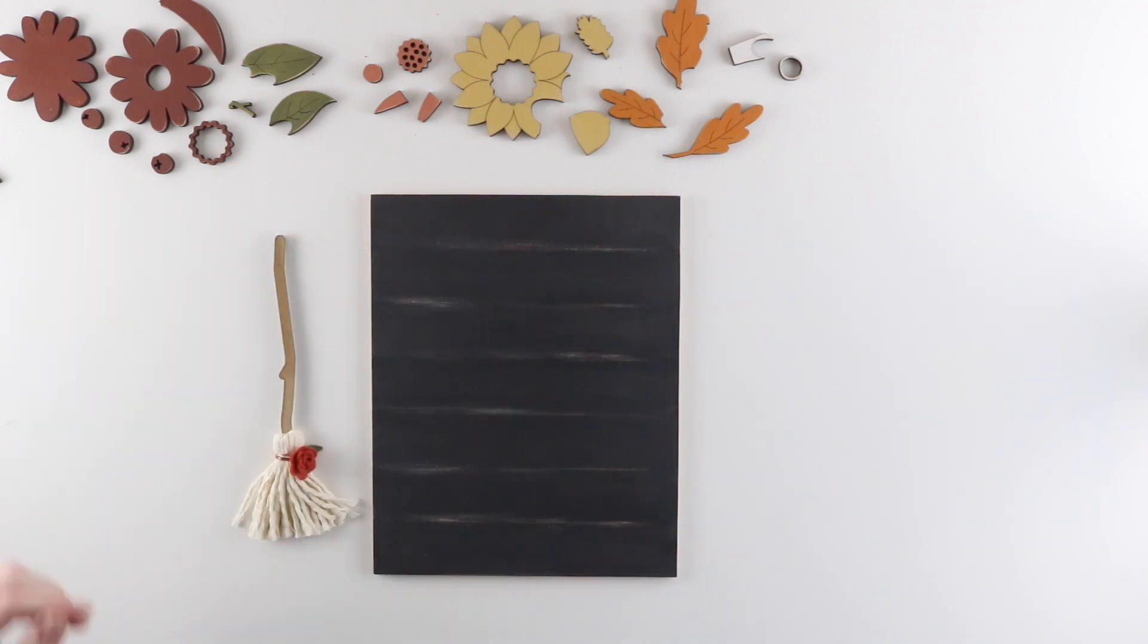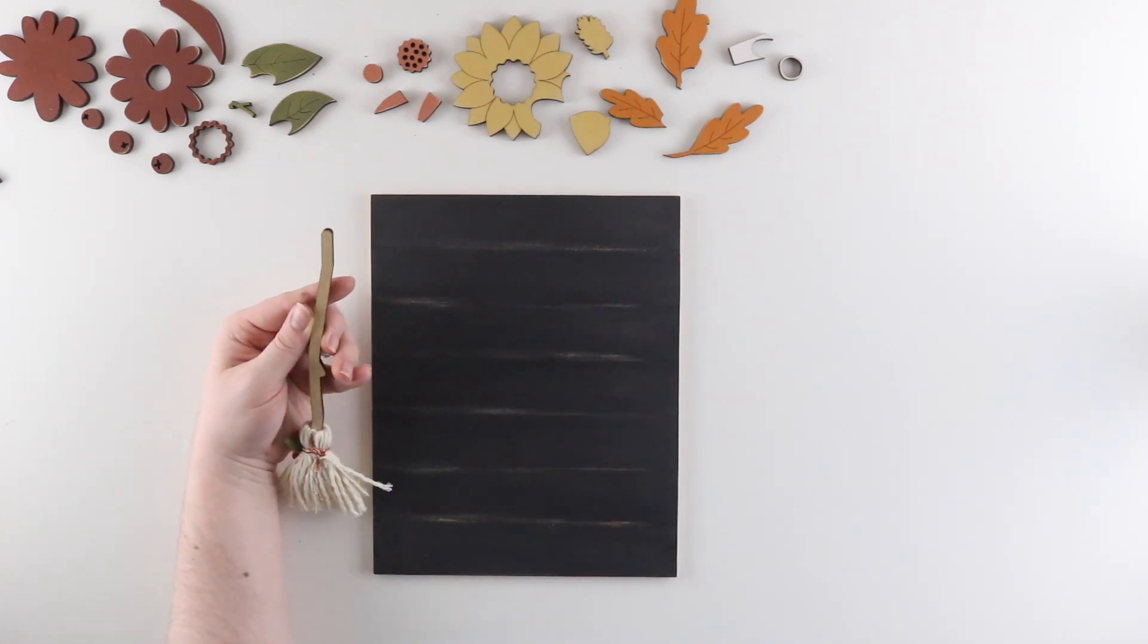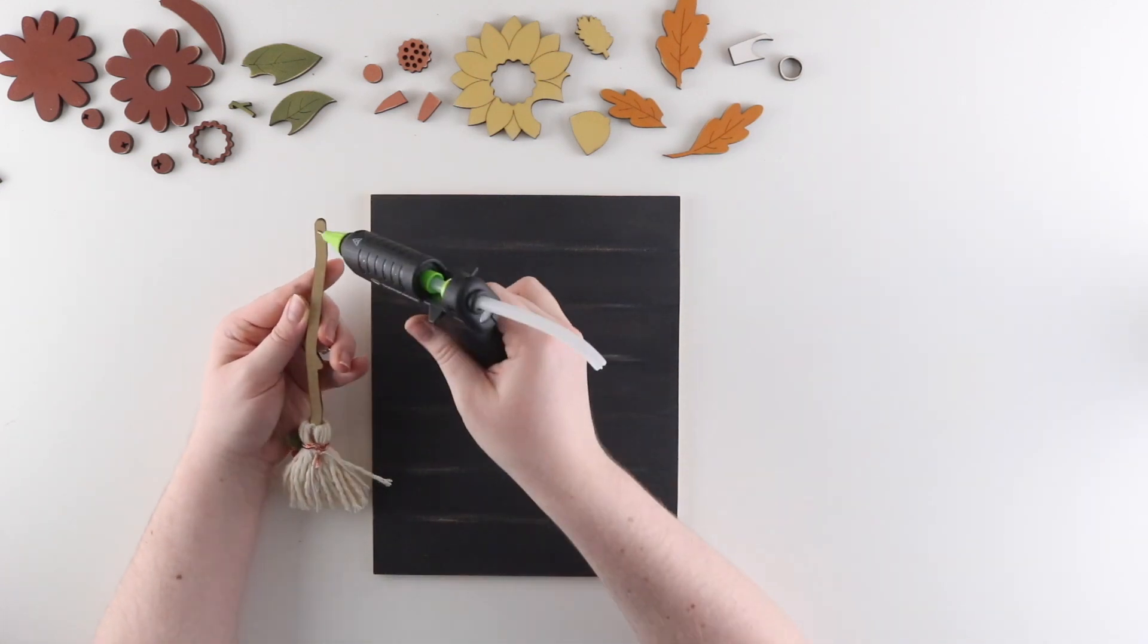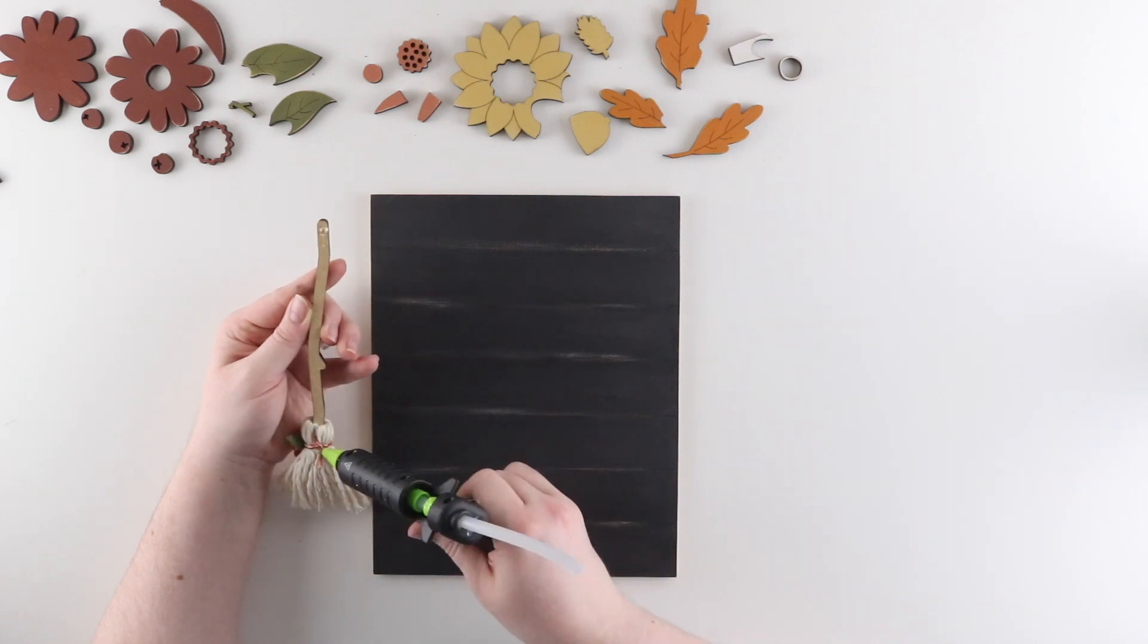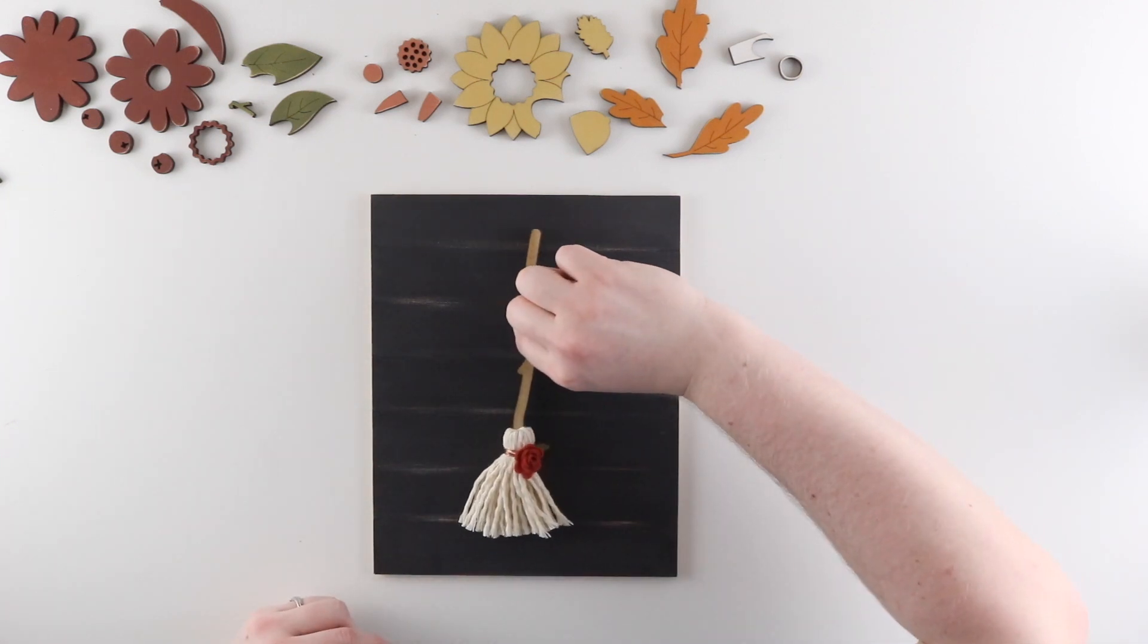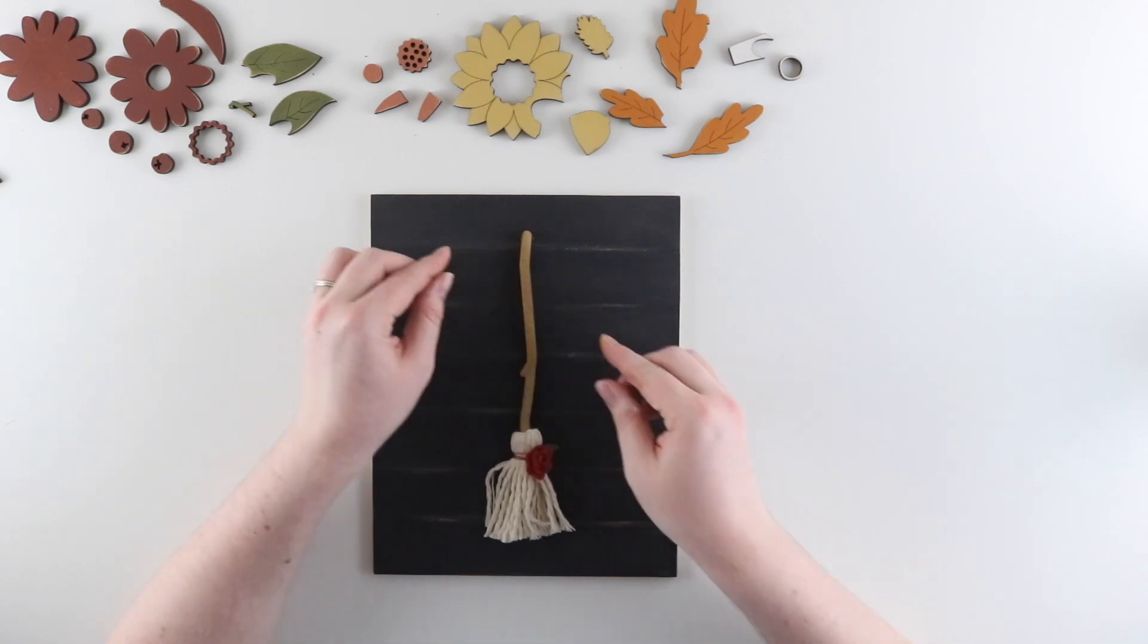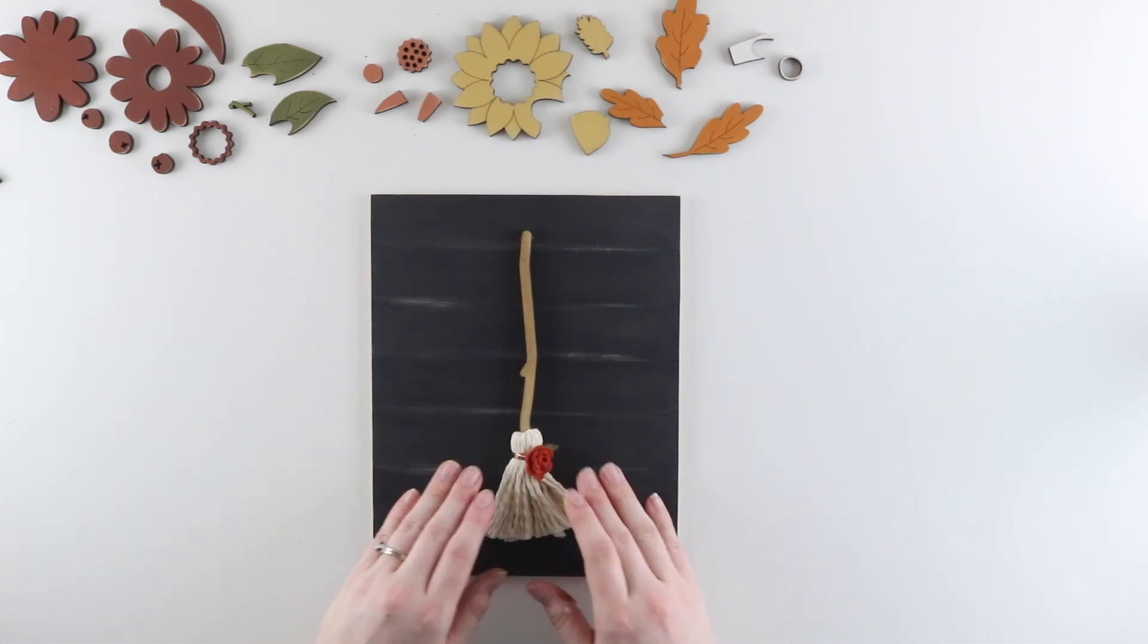And then I'm going to attach the broom to my insert. To do this I'm going to start by taking off the protective layer of the peel and stick backing. Then I'm going to add a tiny dab of hot glue to the top of the handle and a larger one at the top of where the broom bristles are. Since there's a little bit of extra bulk to this piece, these hot glue dabs are going to help hold everything in place on the insert. Straighten out the bristles and this insert is done.